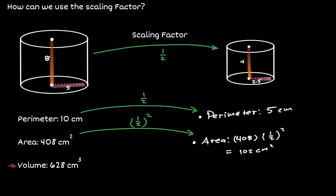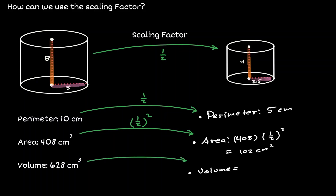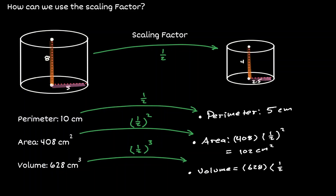The last scenario is about volume. Let's say we know that the volume of the cylinder on the left is 628 centimeters cubed. When it comes to volume, the units are always represented in cubed. One way to obtain the volume of the cylinder on the right is to take the scale factor and raise it to the third power. If we take the volume on the left and multiply by the scale factor raised to the third, we will get the volume of the similar figure. When we multiply those values, that is equivalent to 78.5 centimeters cubed.